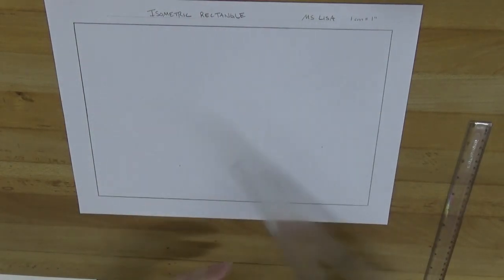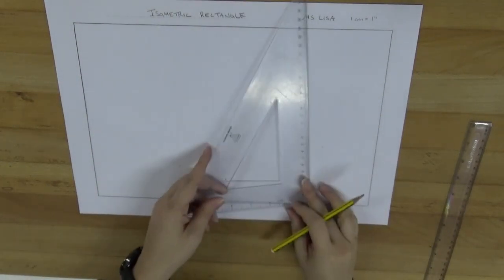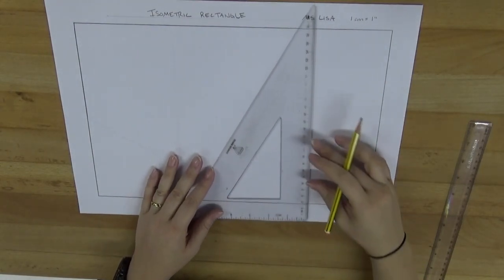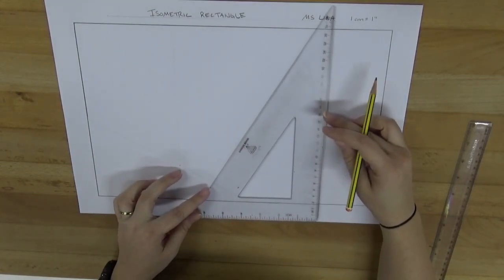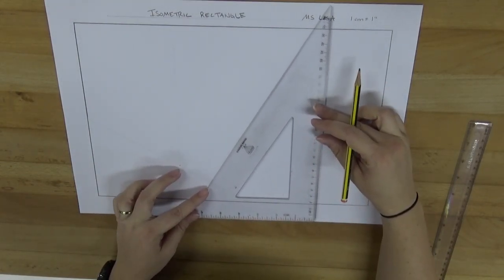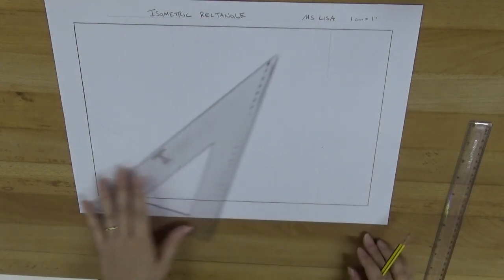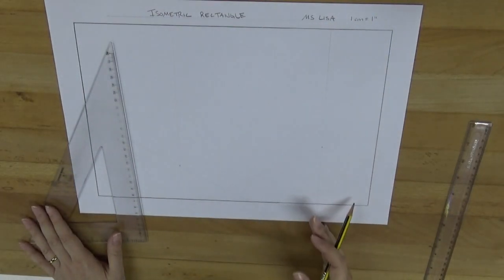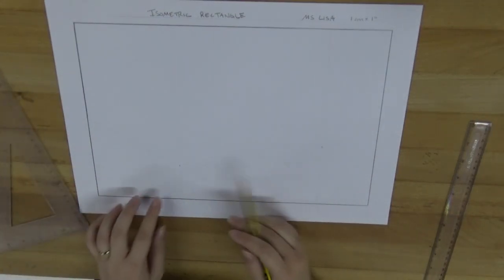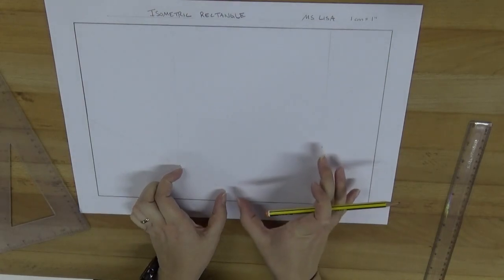I'm going to flip this over to get this 90 degree angle, and I'm going to put this on the edge of the paper and I'm going to draw that totally vertical line right there. Okay, so you can see now that this side is shorter than this side.